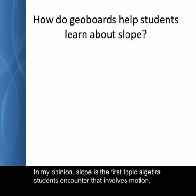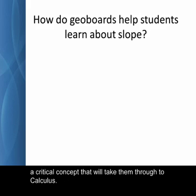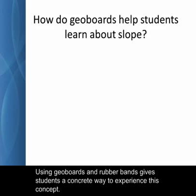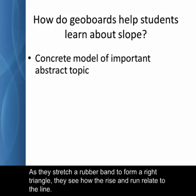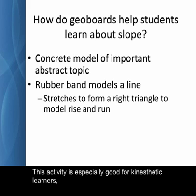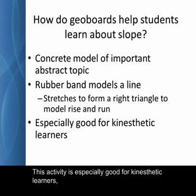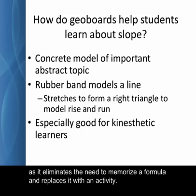In my opinion, slope is the first topic algebra students encounter that involves motion, a critical concept that will take them through to calculus. Using geoboards and rubber bands gives students a concrete way to experience this concept. As they stretch a rubber band to form a right triangle, they see how the rise and run relate to the line. This activity is especially good for kinesthetic learners, as it eliminates the need to memorize a formula and replaces it with an activity.